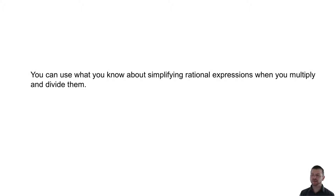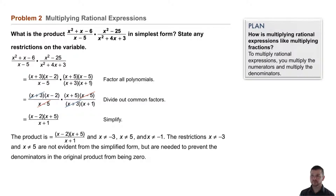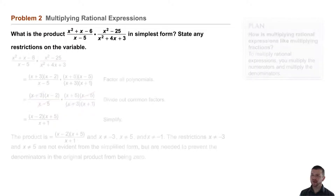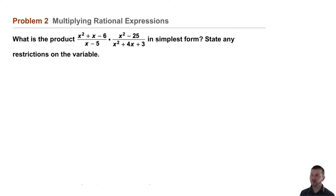You can use what you know about simplifying rational expressions when you multiply and divide them. Problem two: multiplying rational expressions. What is the product of x squared plus x minus 6 over x minus 5, times x squared minus 25 over x squared plus 4x plus 3, in simplest form? State any restrictions on the variable.